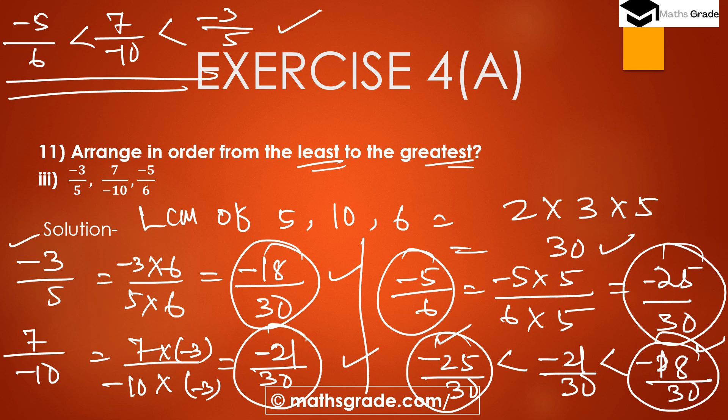When arranging rational numbers in ascending order — smallest to greatest — first find the LCM of the denominators, then convert each rational number into an equivalent rational number by multiplying both numerator and denominator by the same number. Compare the numerators: with negative signs, the bigger number with a negative sign is the smallest rational number.